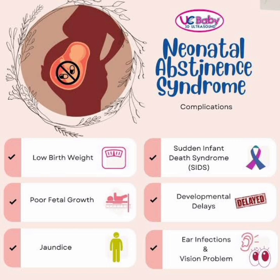Number six: feeding difficulties, poor coordination of sucking and swallowing, frantic sucking. Number seven: excessive wakefulness, not settling or sleeping after a feed. Number eight: sickness and vomiting. Number nine: diarrhea with sore buttocks. Number ten: fever. Number eleven: sweating. Number twelve: excessive sneezing, yawning, hiccups. Number thirteen: less commonly, seizures or convulsions.